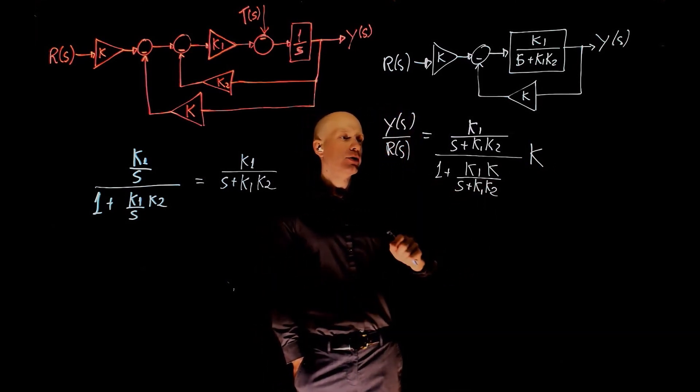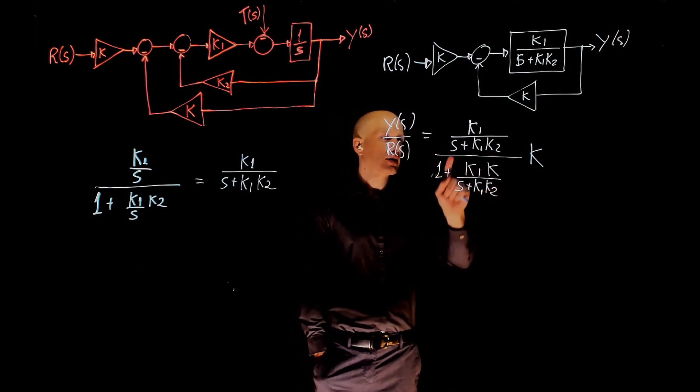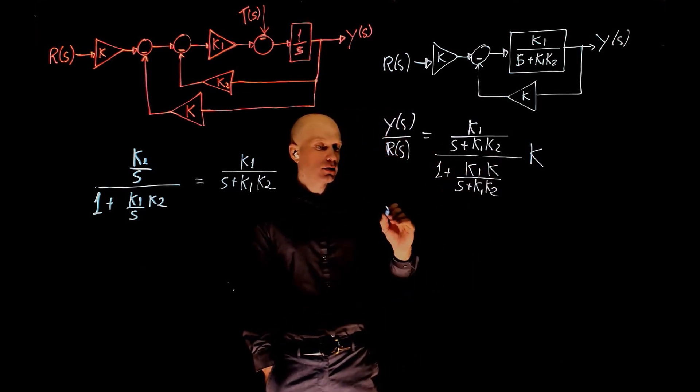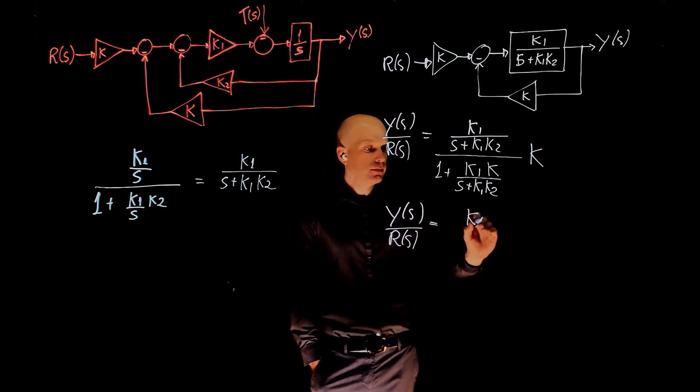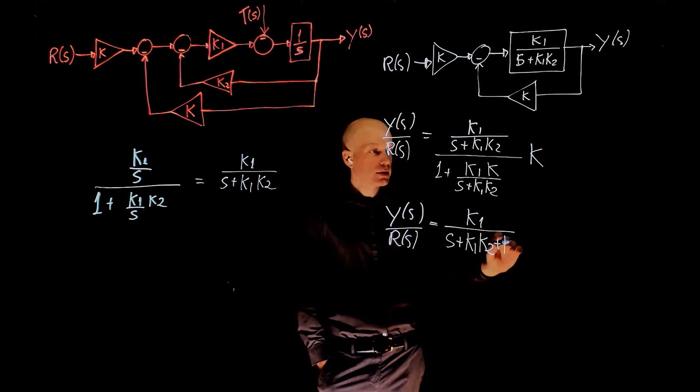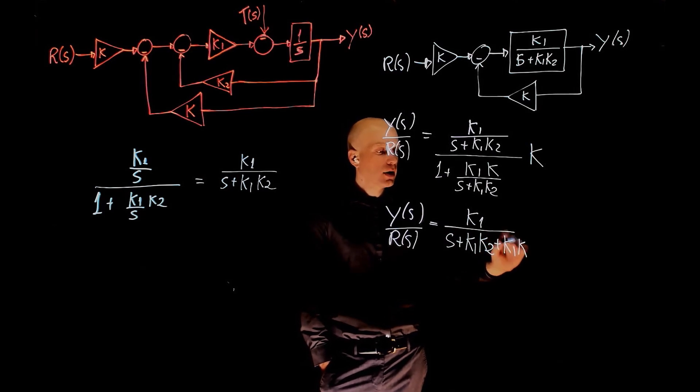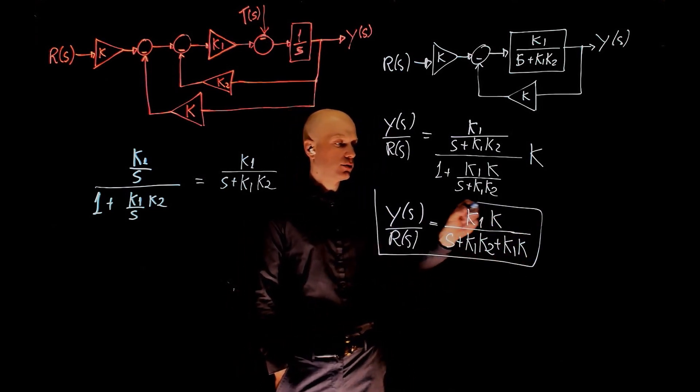Again, finding a common denominator here will allow us to cancel out this s plus k1 k2, and this will simplify to y of s over r of s equals k1 over s plus k1 k2 plus k1 k, all multiplied by k, and this is now the transfer function.